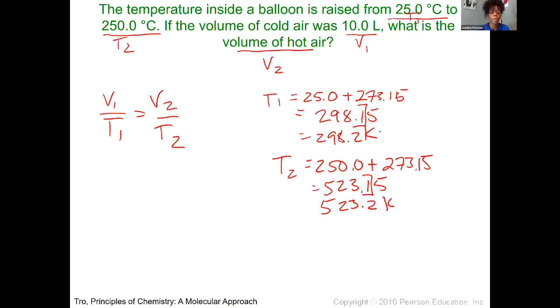I really do suggest that you rearrange your equation first before you try to plug in. It just helps make it a lot easier. So for solving for V2, V2 would end up equaling V1 times T2 divided by T1. And then we're going to go ahead and plug in. So our V1 is 10 liters. Our T2 is 523.2 Kelvin. And our T1 is 298.2 Kelvin.